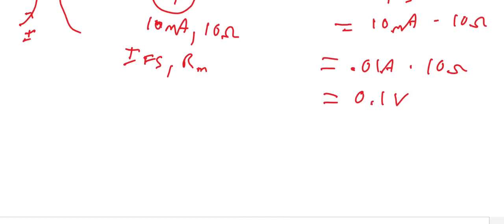So in order for us to increase the voltage from 0.1 volts all the way to 125 volts, a resistor must go in series with the movement.